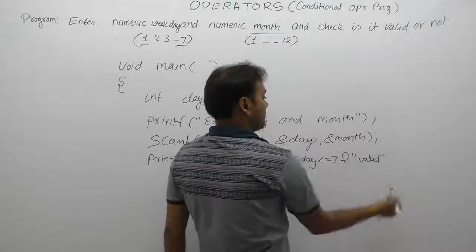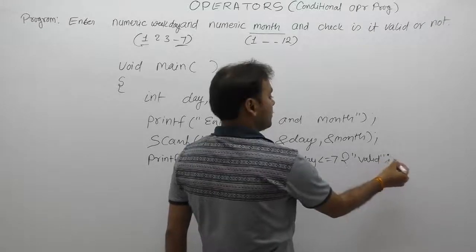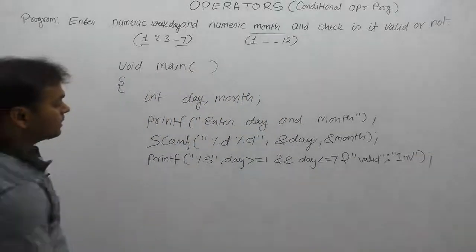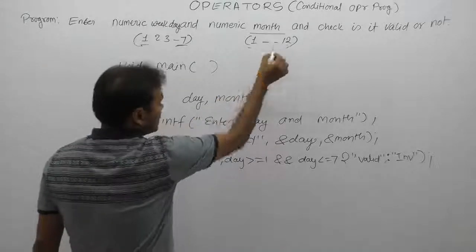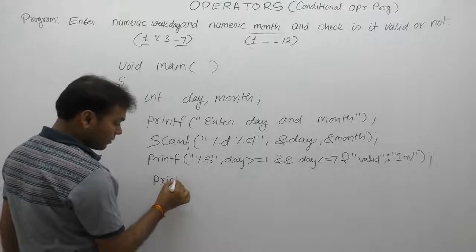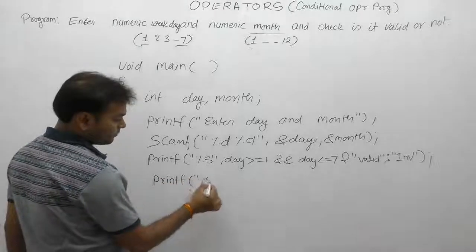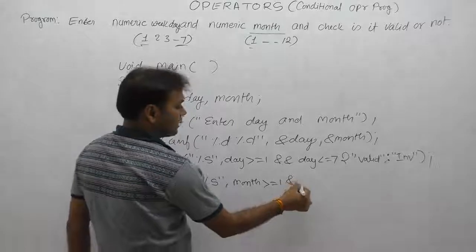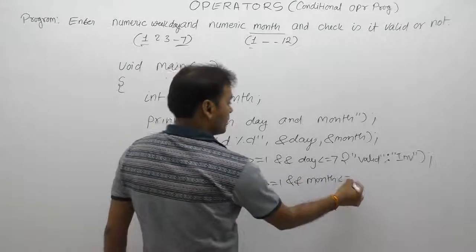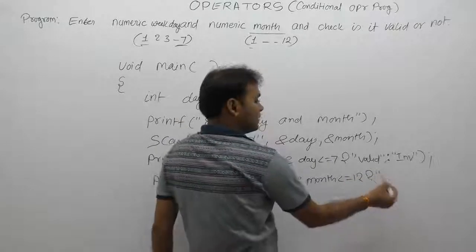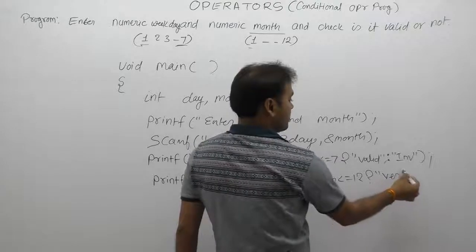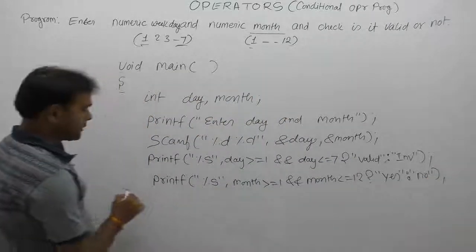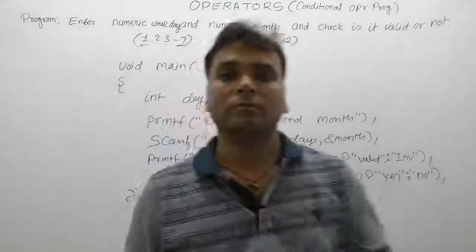Month case: minimum range is one, maximum range is twelve. In both cases, the logic is almost the same. Using format specifier: if month greater than or equal to one AND month less than or equal to twelve, if this condition is true then 'Yes, month is valid', otherwise 'No, the given month is not valid'. That's the logical test pattern. Thank you.